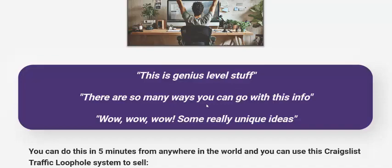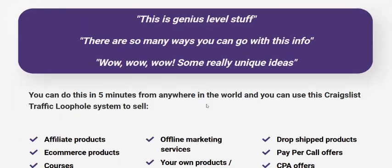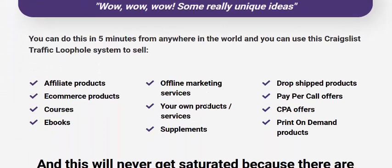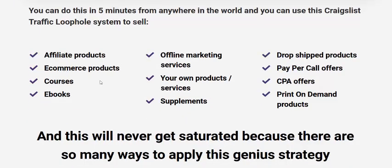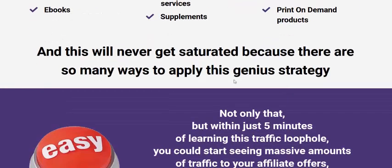This is genius stuff — there are many ways you can use this info. Some really unique ideas. You can do this in five minutes from anywhere in the world. You can use this Craigslist traffic loophole system to sell affiliate products, e-commerce products, quotes, ebooks, offline marketing services, your own products and services, supplements, dropshipping products, pay-per-call offers, CPA, print-on-demand, and domain products.